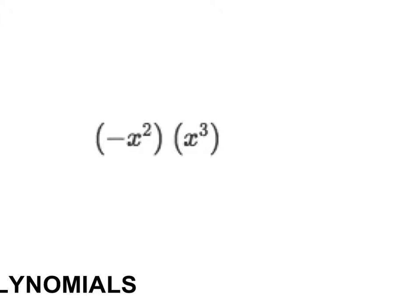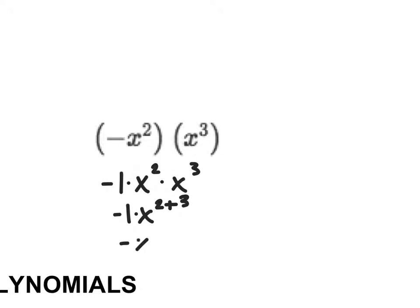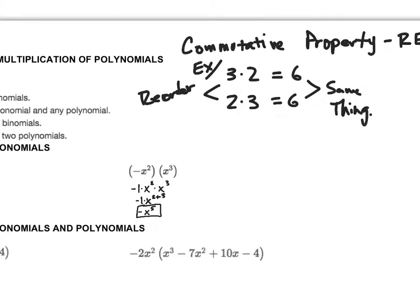Now let's do negative x squared times x cubed. I'm going to rewrite the negative as negative one, so I have negative one times x squared times x cubed. There's an implied one on the x cubed term. Adding exponents: x to the two plus three power gives me x to the fifth. So the answer is negative x to the fifth. If you need to write out all these steps, do so. If you can do it in your head, that's fine too.